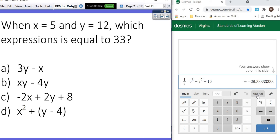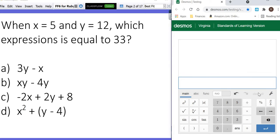All right, this one says when x is 5 and y is 12. So the first thing you do is type that in, x equals 5, go to your next line, y equals 12, and then it says which expression equals 33. So that's what we're looking for. So let's type each answer choice in until we get one that equals 33.